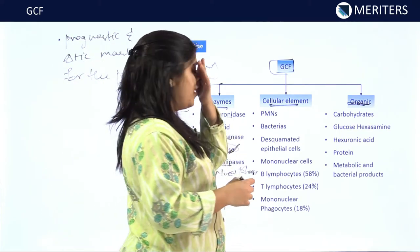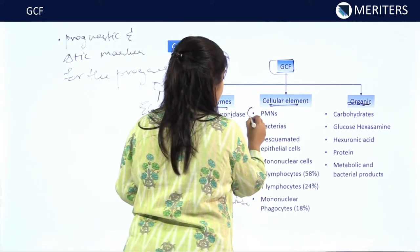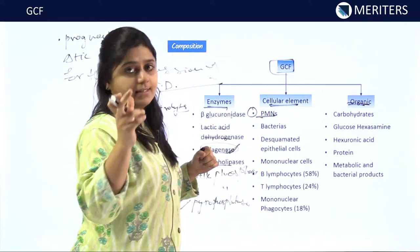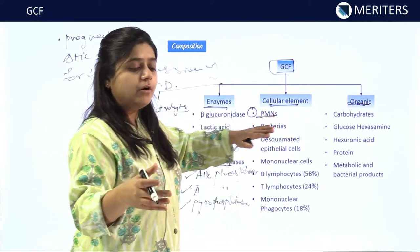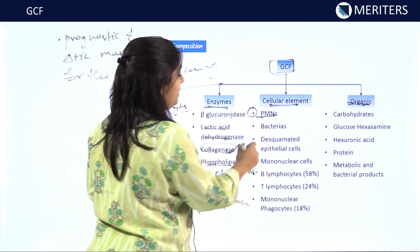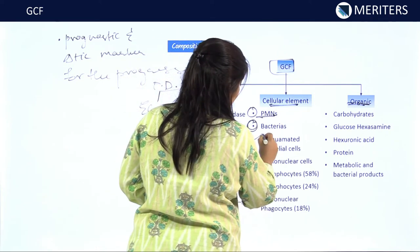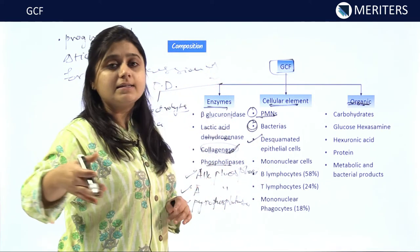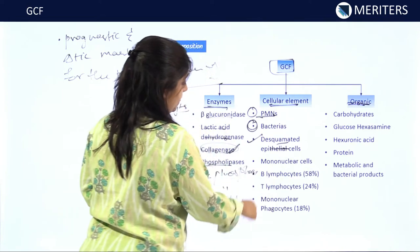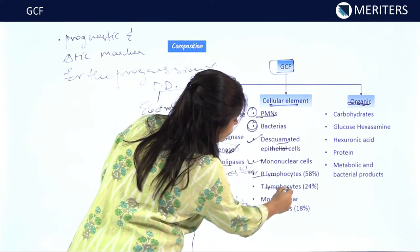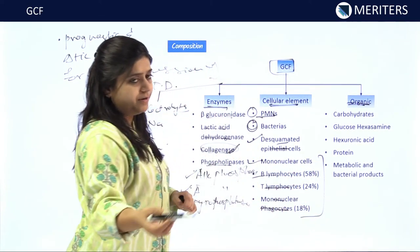The cellular elements more commonly found in GCF are PMNs, which are found during the initial disease when inflammation just started — they are the primary line of defense cells. Bacteria are also found during active periodontal disease. Desquamated epithelial cells are found at later stages when the disease is subsiding, along with mononuclear cells, B lymphocytes, T lymphocytes, and mononuclear phagocytes.